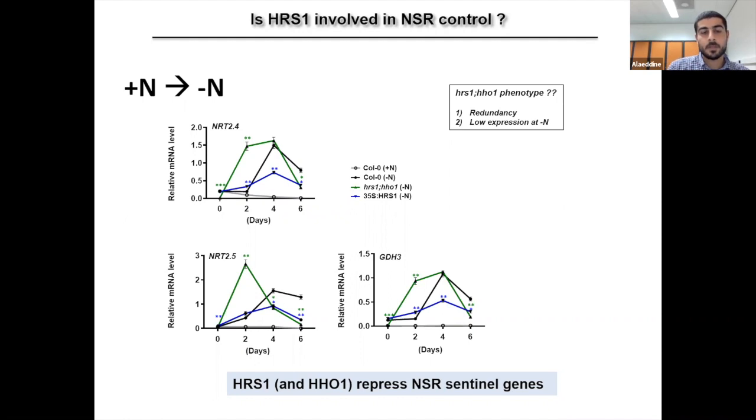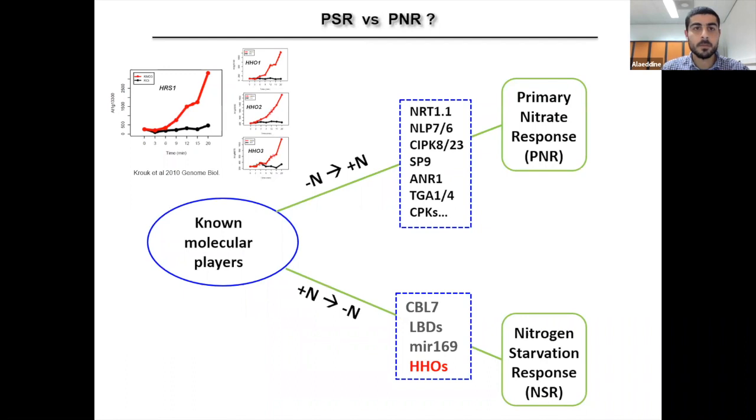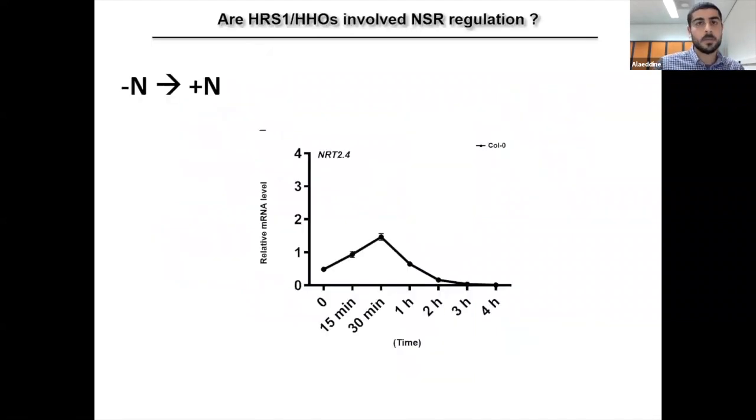However, the double mutant phenotype was not exactly as we expected, since it only shows derepression at one time point. But if you think about it, this is normal because of the redundancy with the other HHO members and also because of their low expression at minus N. I remind you that HHOs are highly and rapidly induced upon N supply. However, their expression level at minus N is very low. So that's why we don't expect a strong phenotype of the mutant at minus N conditions. So we decided to change the experiment settings.